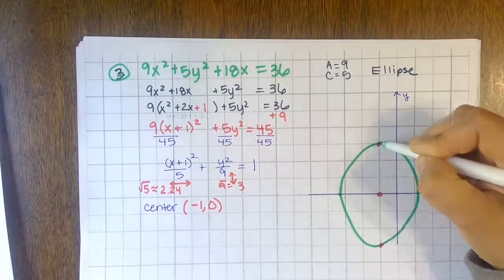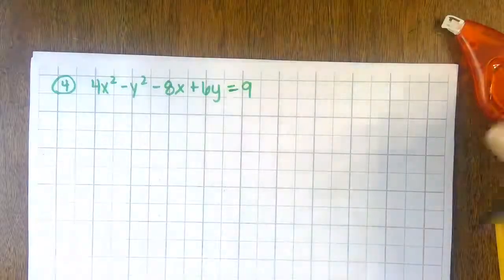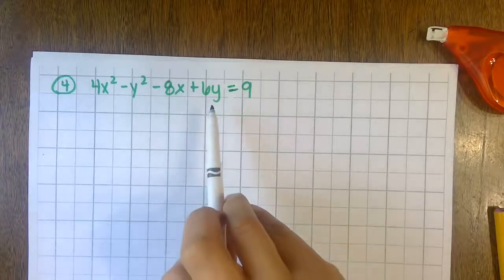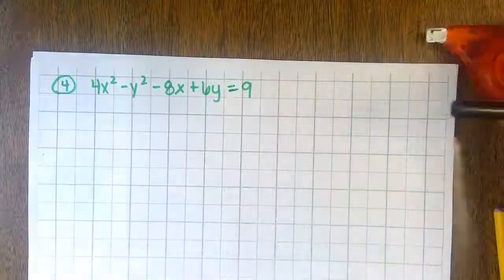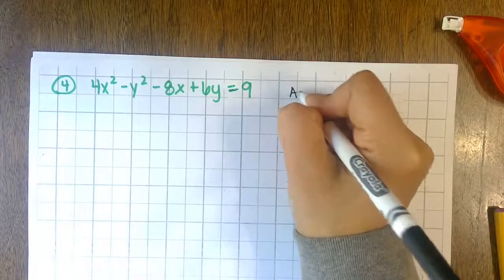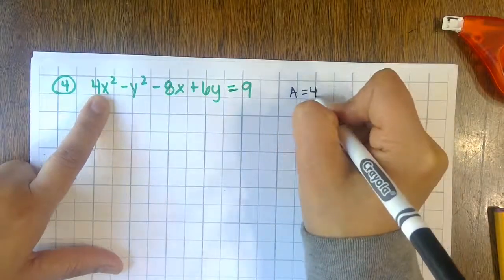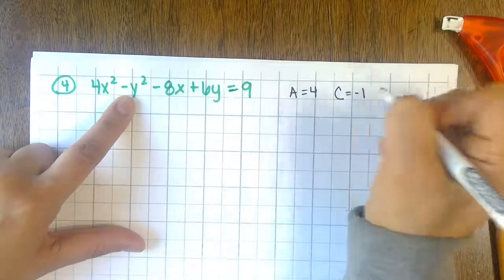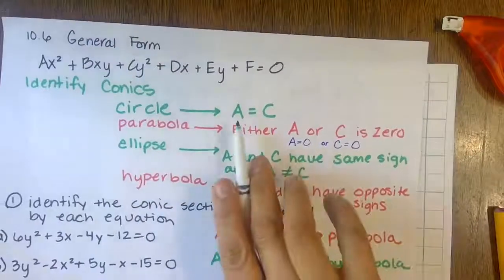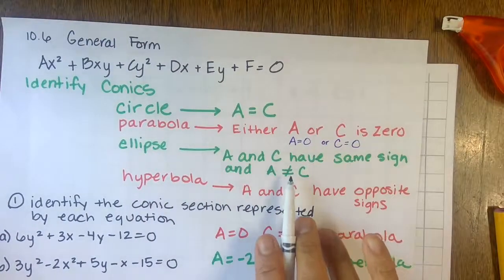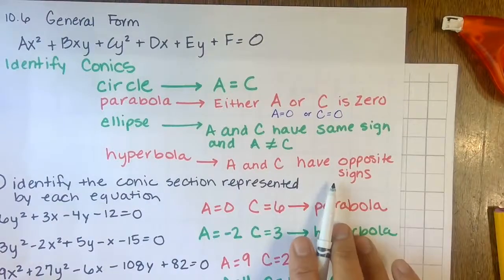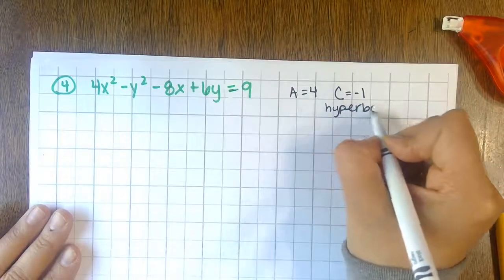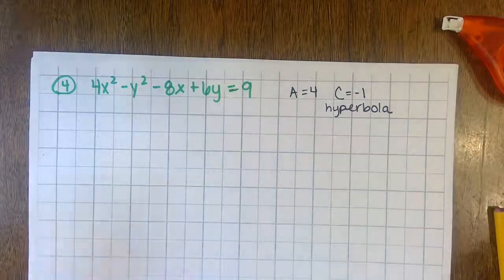Next problem: identify the conic section, rewrite in standard form, and graph. A value is four, C value is negative one. Looking at the notes — they're not the same, neither is zero, they don't have the same sign, they have opposite signs — so this is definitely a hyperbola.